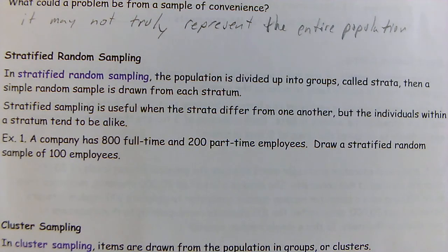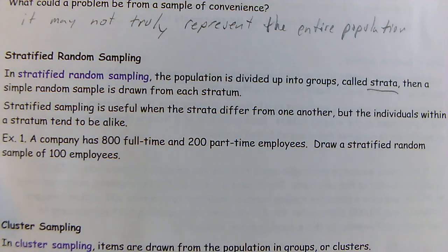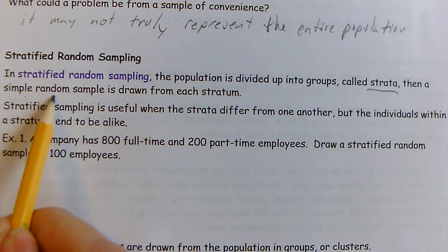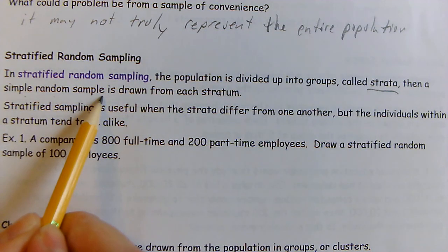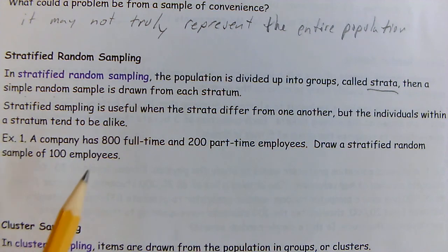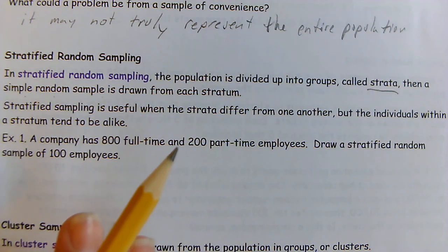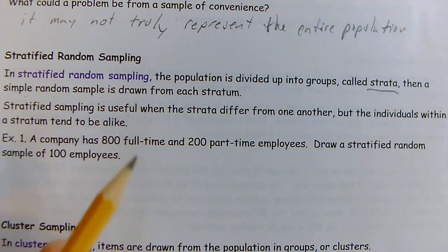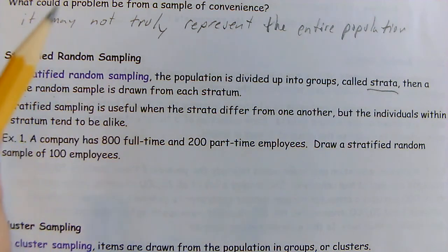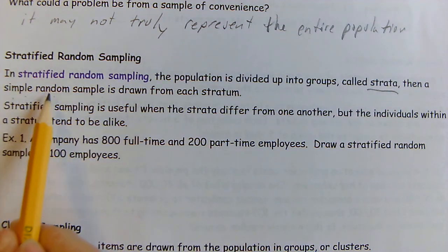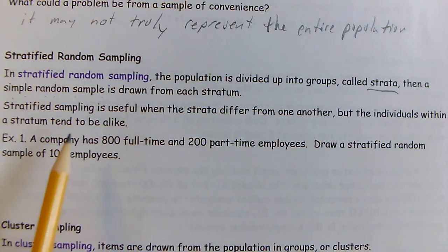Stratified random sampling is when the population is divided into groups called strata, and then a simple random sample is drawn from each stratum. This is important: you have an entire population with different categories or strata. Once you break up those groups, the sample you take from each group is a true simple random sample.